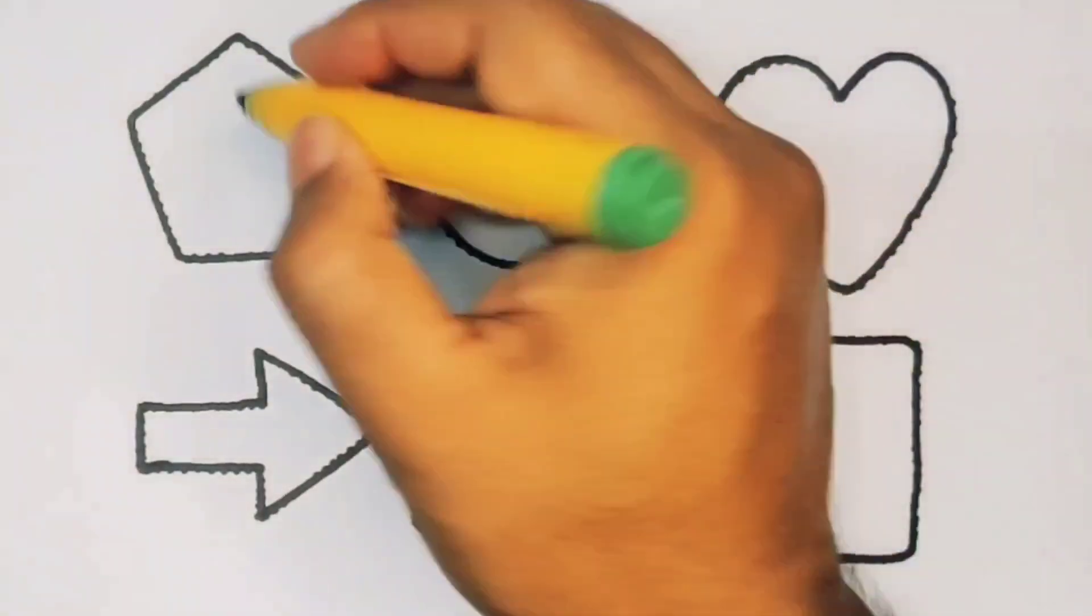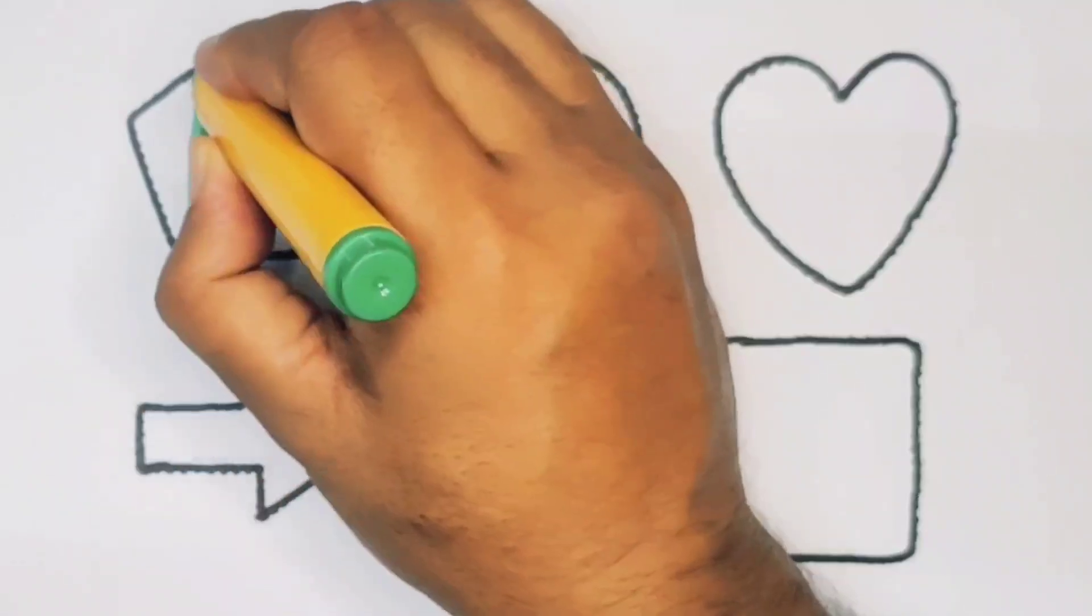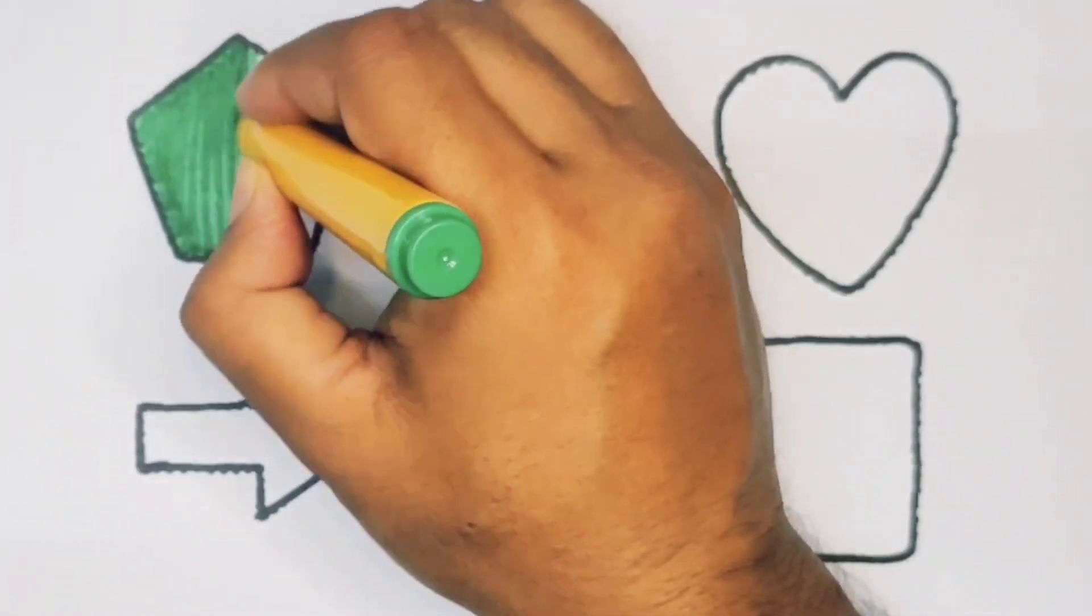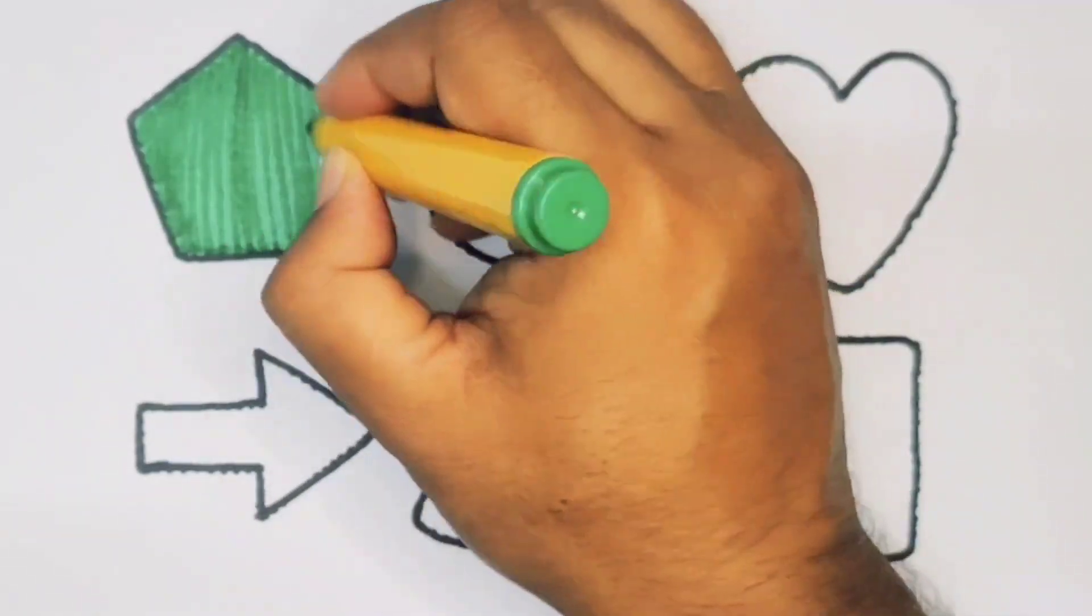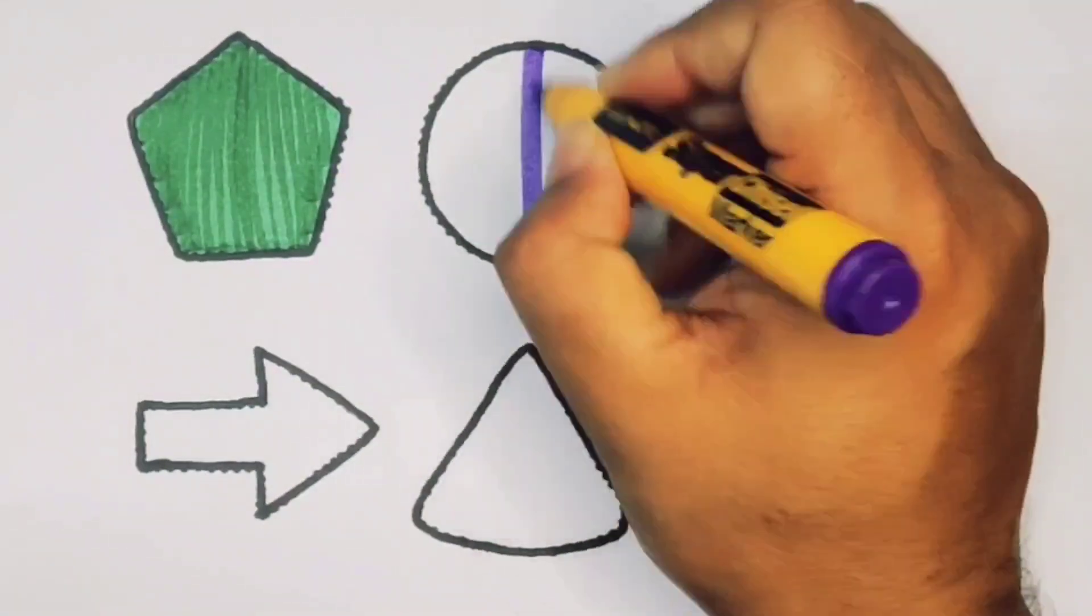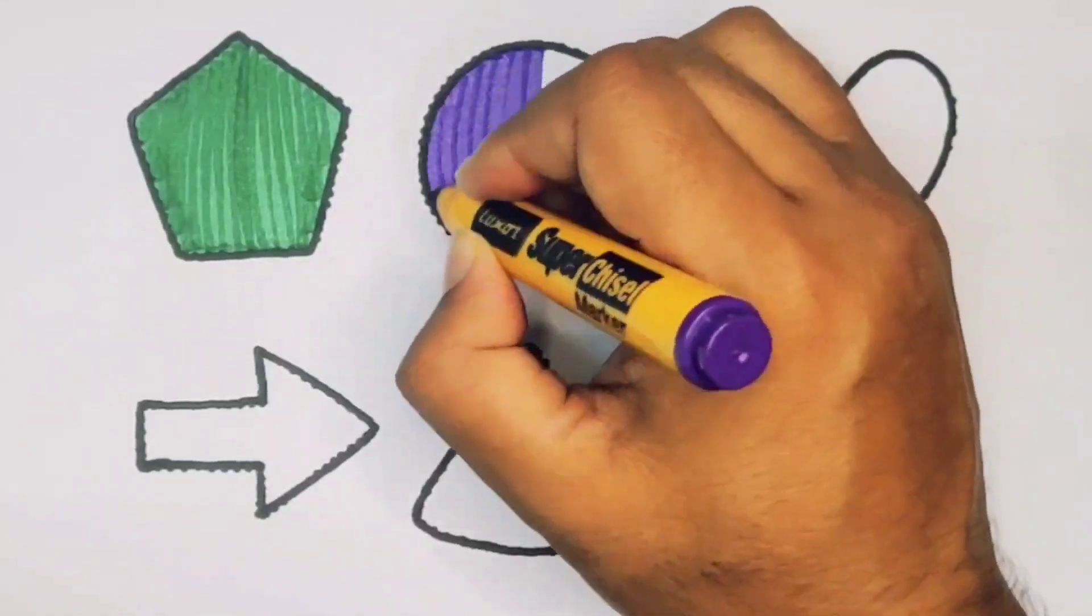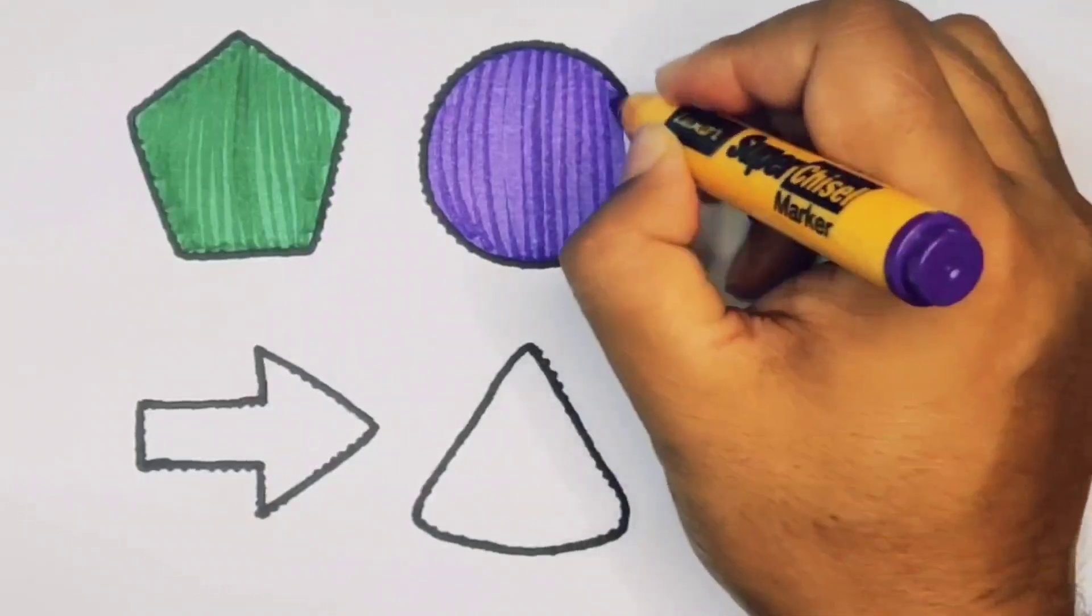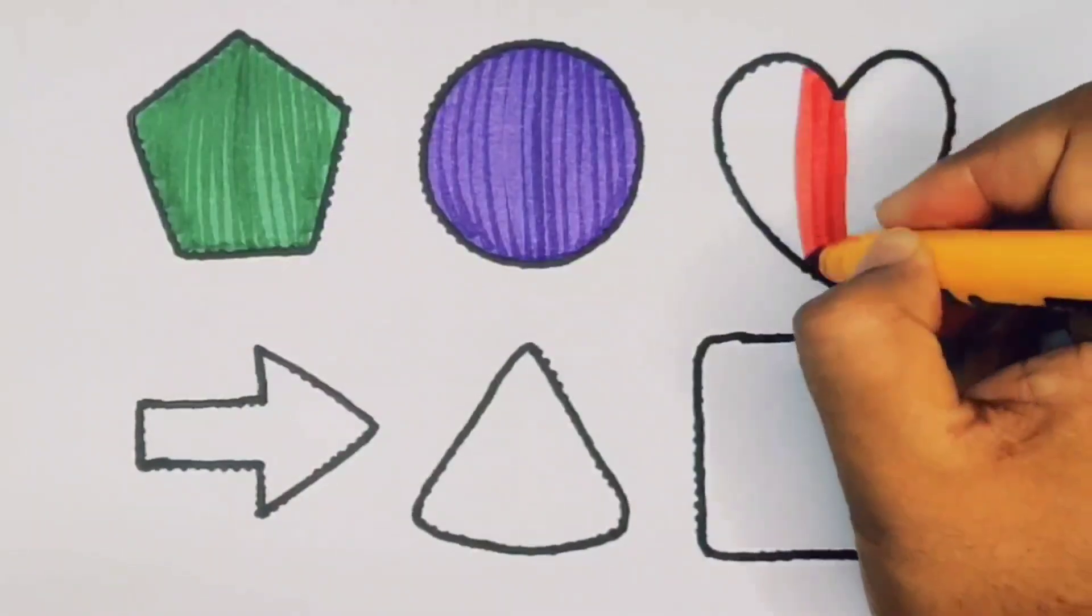Now going to put the color. Green color pentagon. Purple color circle. Red color heart.